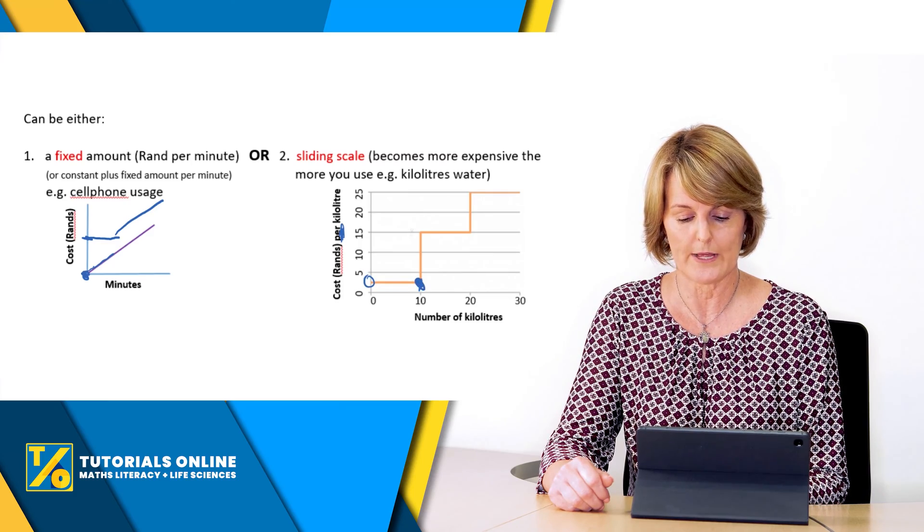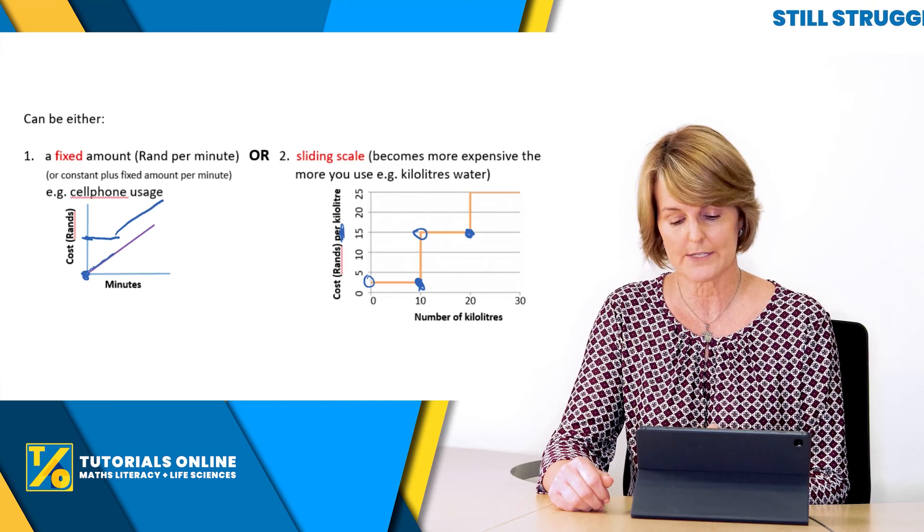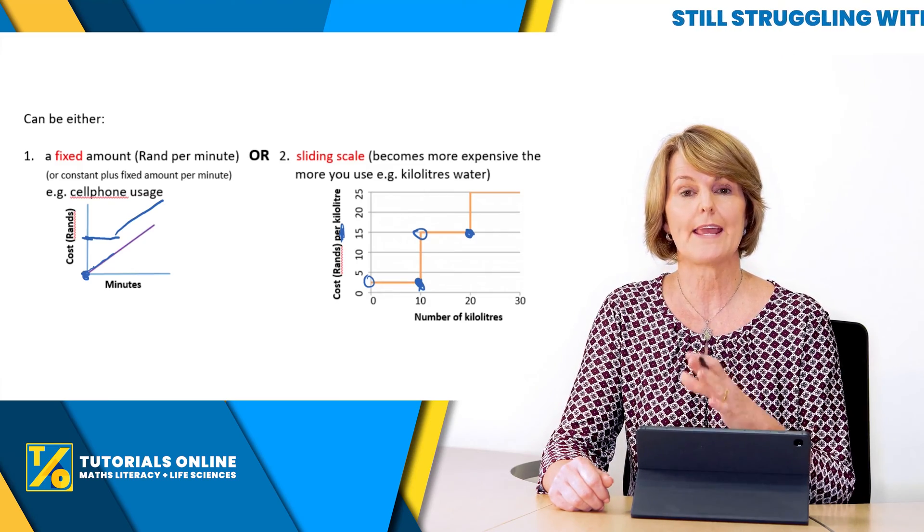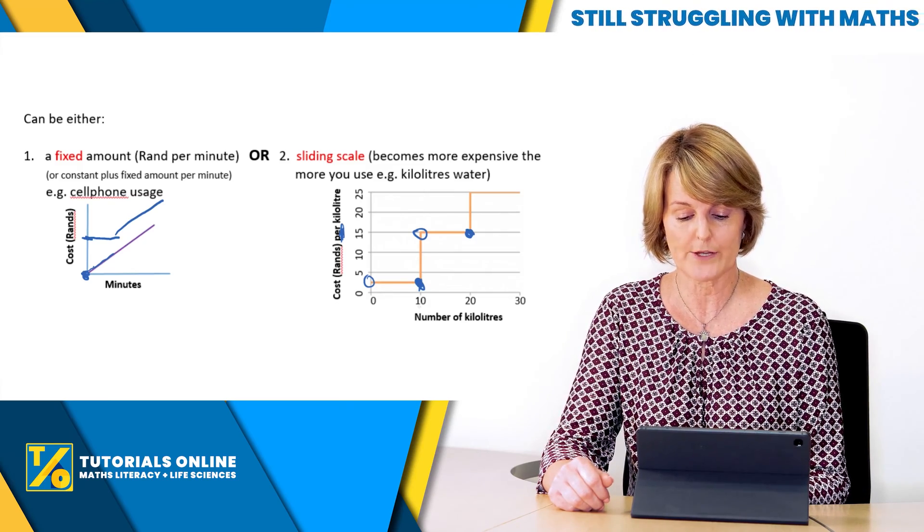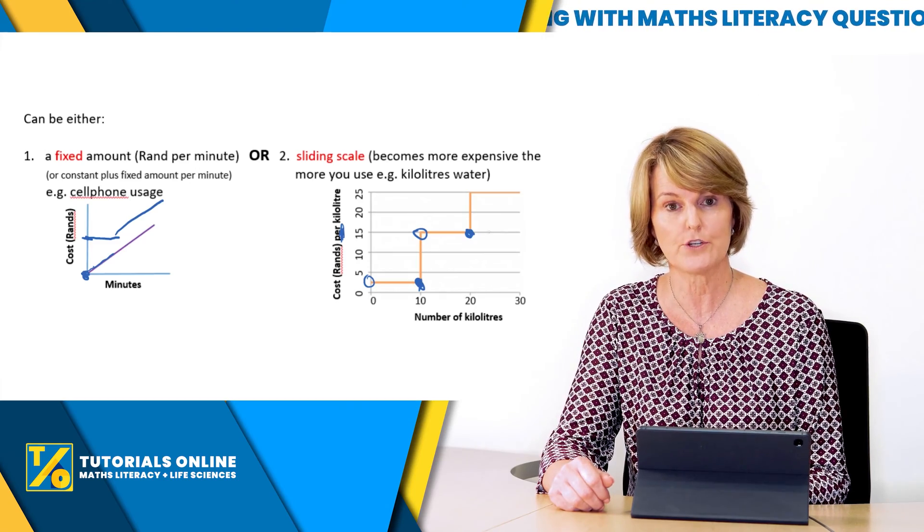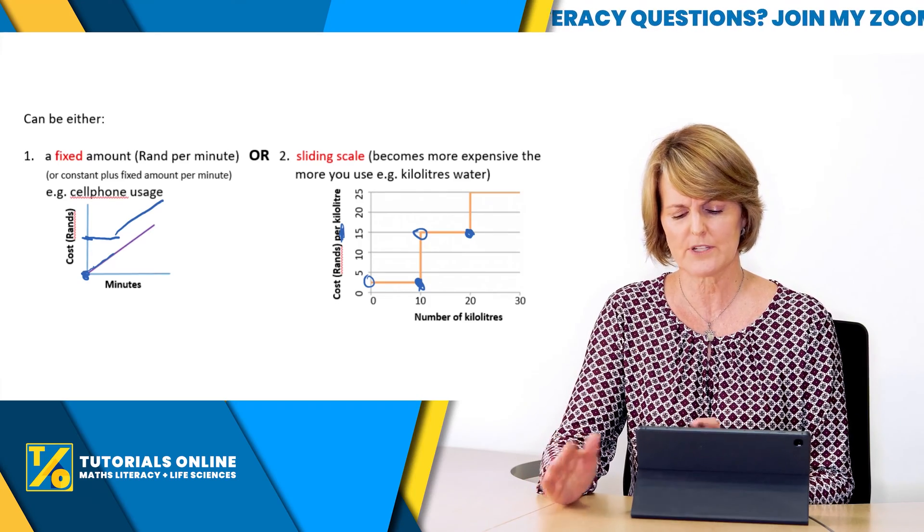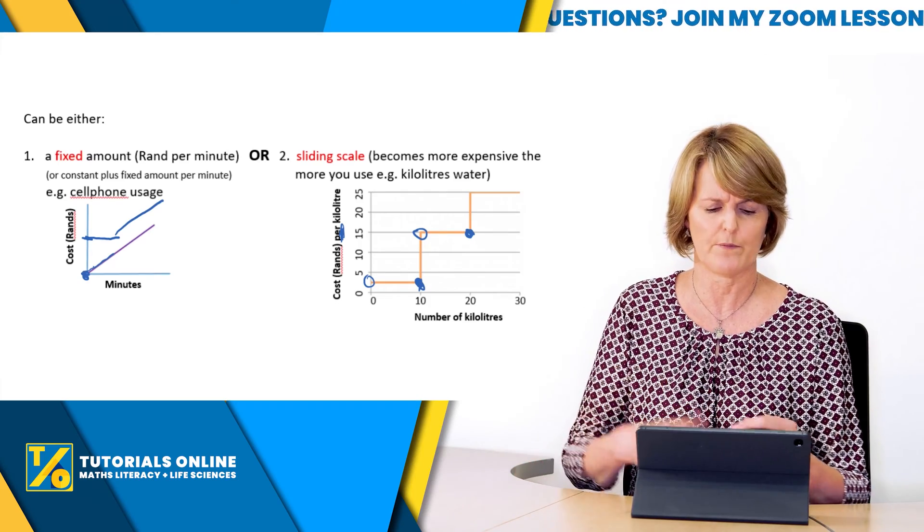One thing I just want to tell you is with these graphs you normally have an open circle and a closed circle. What that means is the open circle excludes, it would exclude 10 rand but include 20 rand, so that range is above 10 rand but will include 20. Just keep that in mind as well if you get an example like this.